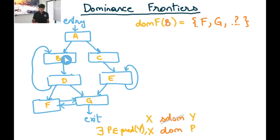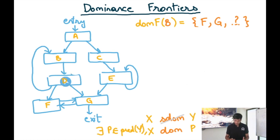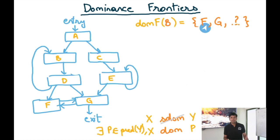Now let's look at the dominance frontier of B. There's a path going to D — is D strictly dominated by B? Yes, so D is not in the dominance frontier of B because the requirement is that it should not be strictly dominated by B. But F is not strictly dominated by B because there are other paths to F from entry through A, C, E, G, F. However, a predecessor of F, which is D, is dominated by B. So F is in the dominance frontier of B.